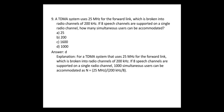Question 9: a TDMA system uses 25 MHz for the forward link, which is broken into radio channels of 200 kHz. If 8 TDMA signals are supported on a single radio channel, how many simultaneous users can be accommodated? Question 10 follows the same parameters: 25 MHz divided by 200 kHz, giving the number of channels, and 1000 users can be accommodated.